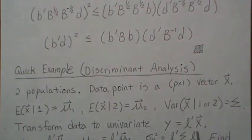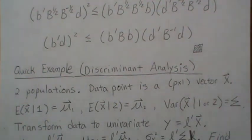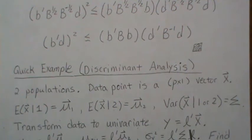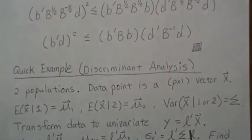And we want to transform our multivariate data to univariate data with some linear combination. Now, so we take our multivariate data, we take a linear combination, and we get a number. And then we're going to use that number to decide if it's population one or population two.